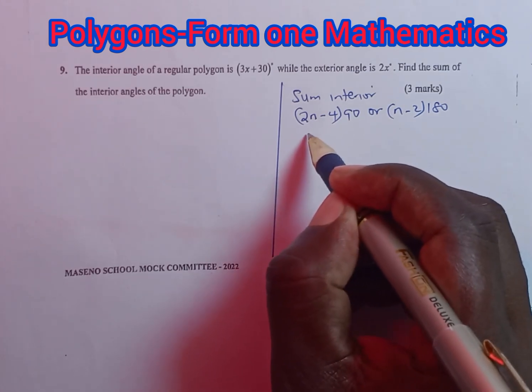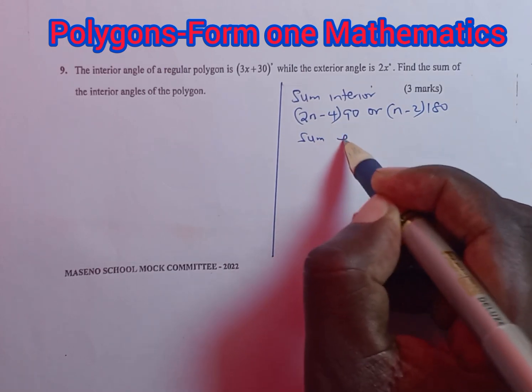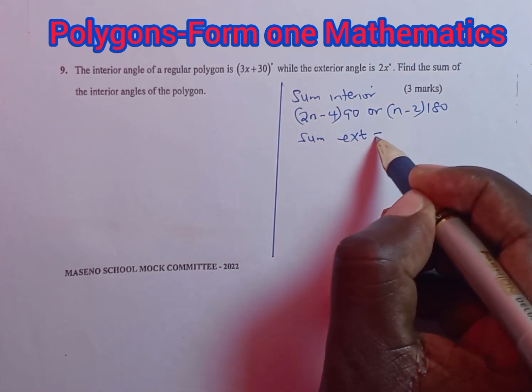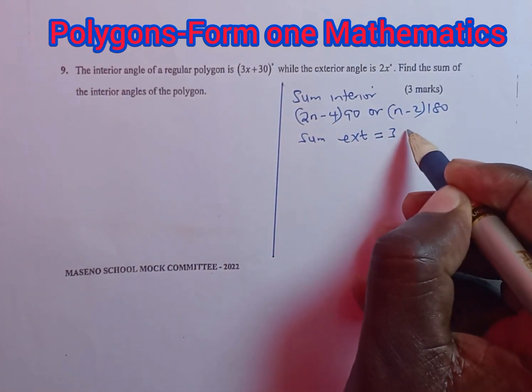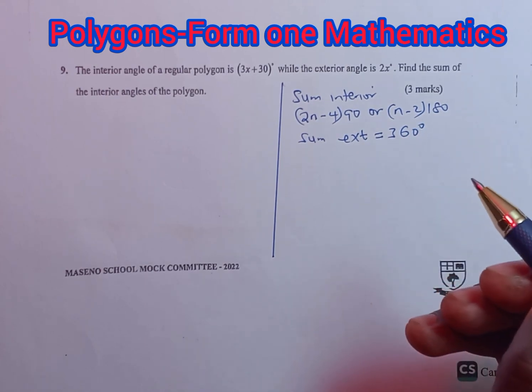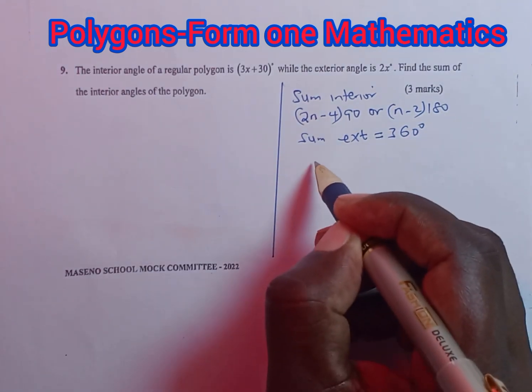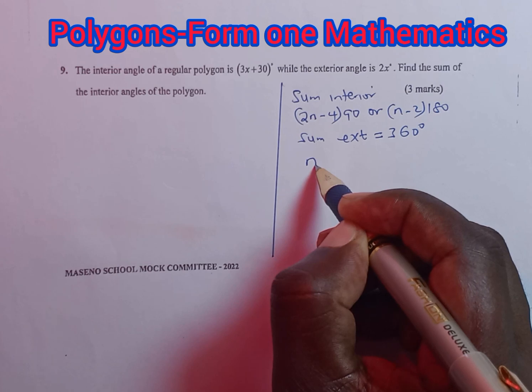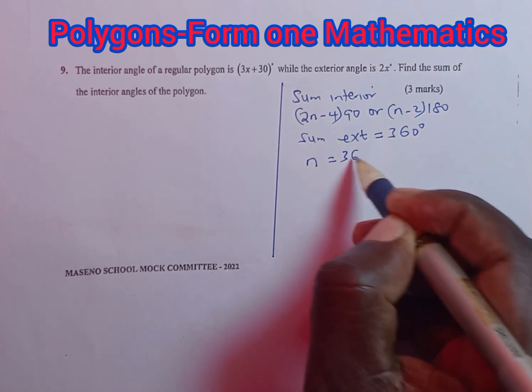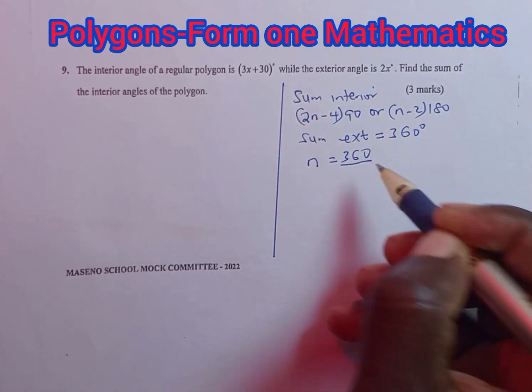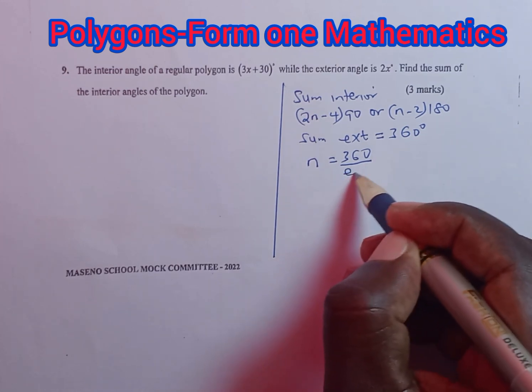We know the sum of exterior angles of any regular polygon will always add up to 360 degrees. To get the number of sides of the polygon, we simply take the sum exterior, 360, and divide by each exterior angle.